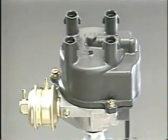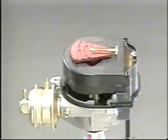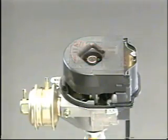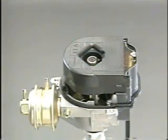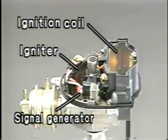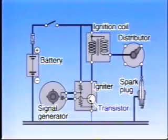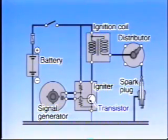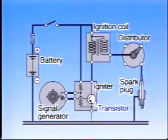Now let's take a closer look at how a high voltage is generated using an actual transistorized ignition system. An ignition coil, a signal generator, and an igniter are integrated with the distributor. In the transistorized ignition system, the ignition signal from the signal generator is transmitted to the transistor in the igniter, which turns the primary current in the ignition coil on and off.